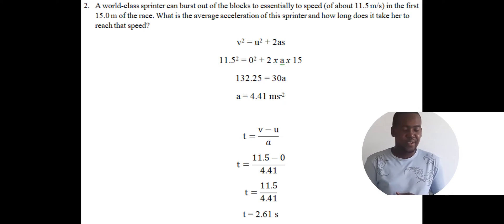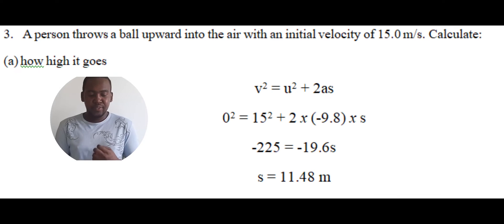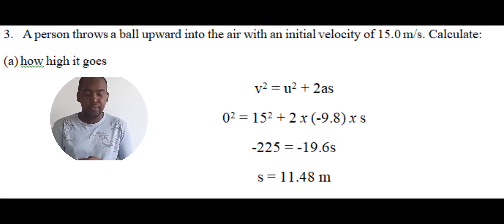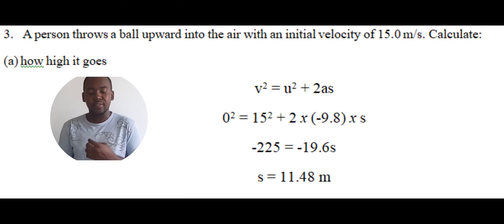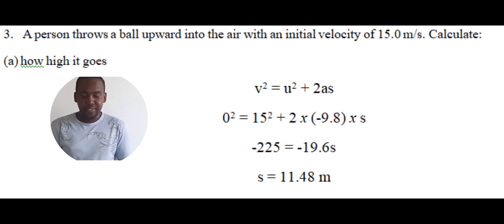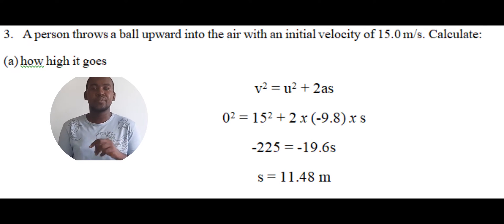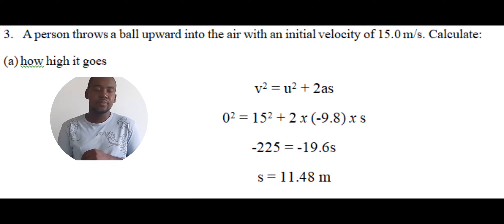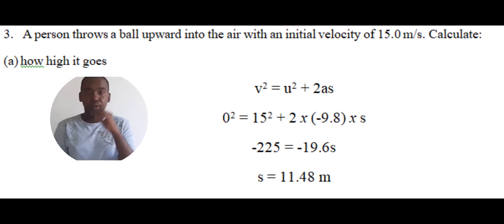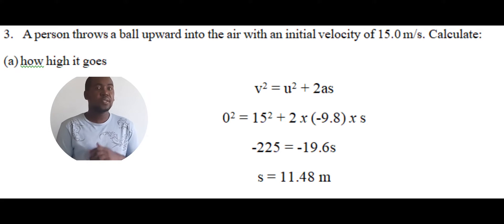Question three: a person throws a ball upwards with an initial velocity of 50 meters per second. Calculate part A, how high it goes. This is a free fall question. The important thing to remember is that the acceleration of any object in free fall is always gravitational acceleration, which is 9.8 meters per second squared.